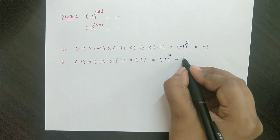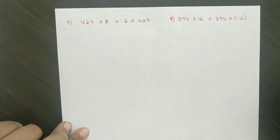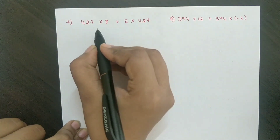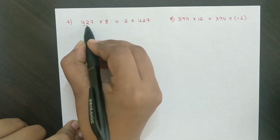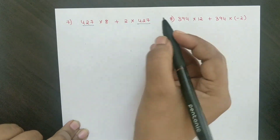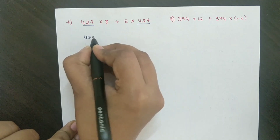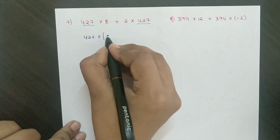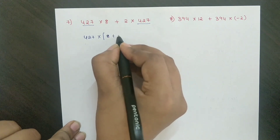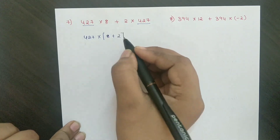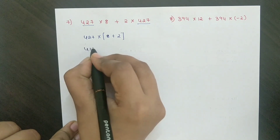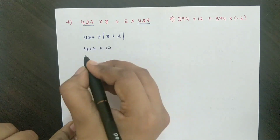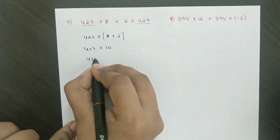In this problem, using the distributive property, take 427 as common: 427 into the remaining 8 plus 2 equals 427 into 10, which equals 4270.